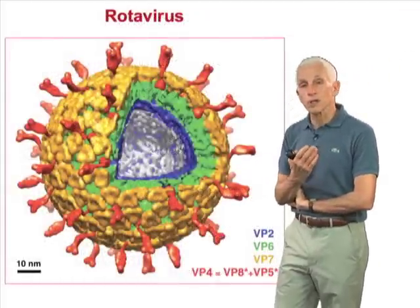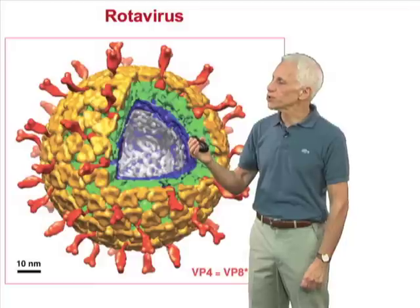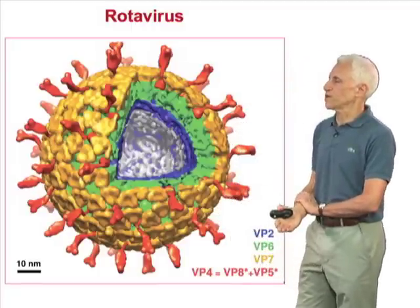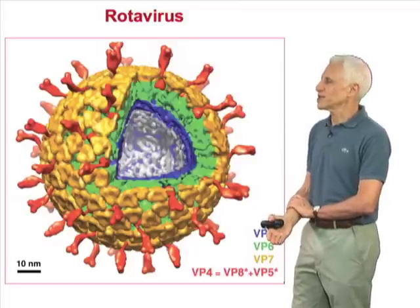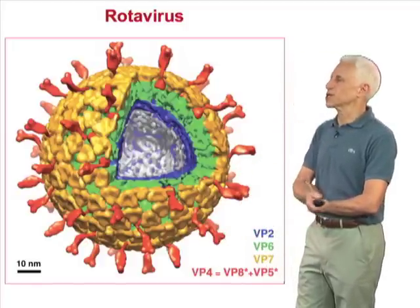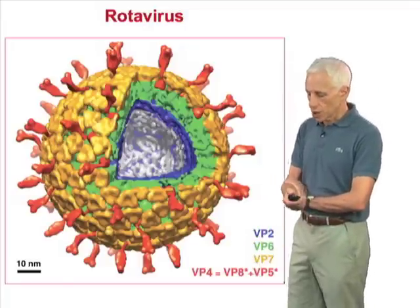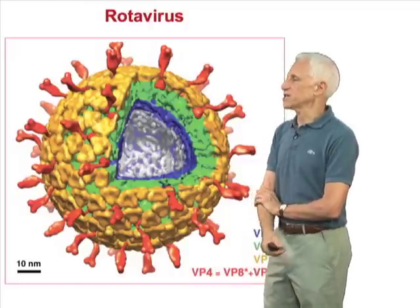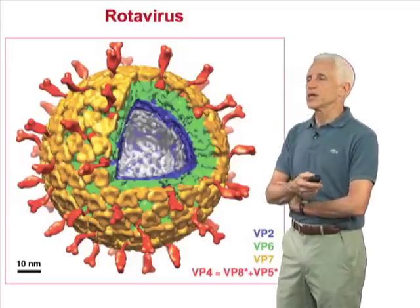Here's an introduction to the rotavirus particle. It's sometimes called a triple-layered particle because it has three protein layers: an inner blue layer, an intermediate green layer, and an outer yellow and red layer, composed of proteins known as VP2, VP6, and VP7 and VP4. The red protein is cleaved to two fragments known as VP8 and VP5, and those who followed the previous part may begin to see similarities between this cleavage and the kind that activates viral fusion proteins like flu hemagglutinin. The particle is about 800 angstroms in diameter.